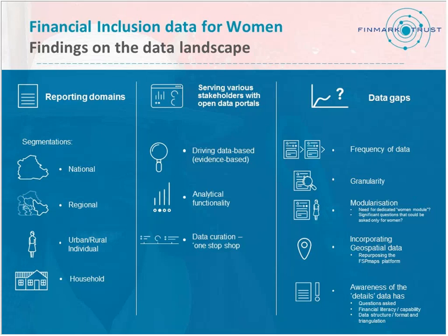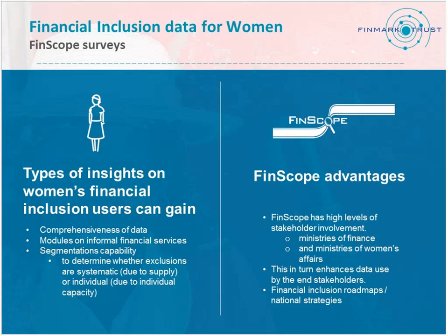On the data gaps: people are aware of the data, yes, but they don't know how detailed the data is — for example, the kind of questions asked. They know at a high level there's a gender gap of 20% or 2%, but what can you do then? That's one of the reasons why FinScope is so comprehensive — to start answering whether exclusion is systematic or is it based on individual capacity. For example, offering a mobile-based solution — does it mean that adults are actually capable of using a mobile device? So that's talking to usage.